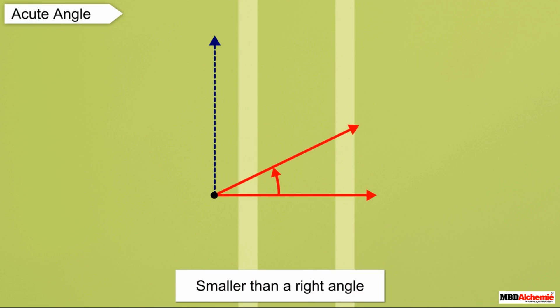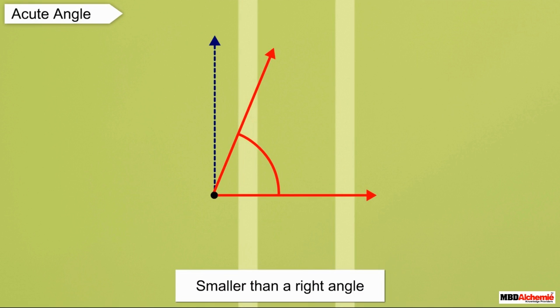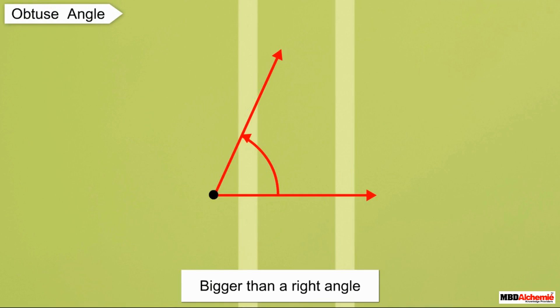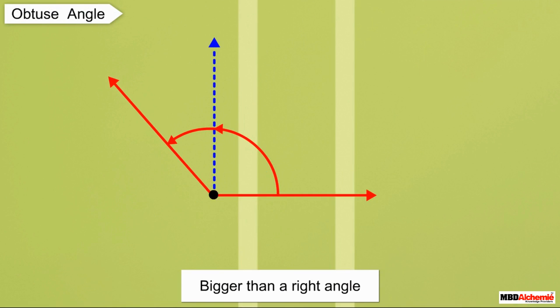Acute Angle: An angle which is smaller than a right angle is called an acute angle. Obtuse Angle: An angle which is bigger than a right angle is called an obtuse angle.